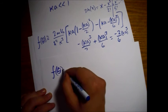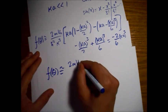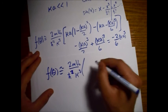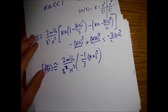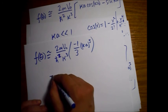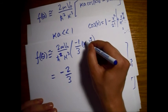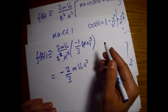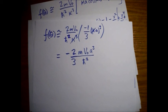So for the low energy case we have minus 1 over 3 times kappa A cubed. Combining this with the overall prefactor, the kappa and kappa cubed terms cancel out, leaving us with minus 2 thirds times m V-naught A cubed divided by h-bar squared.